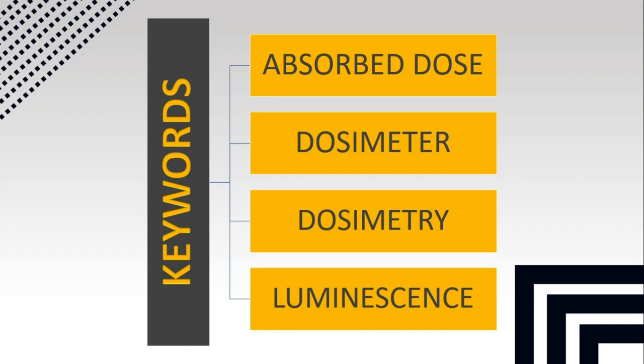A dosimeter is a detector that can detect and measure directly or indirectly exposure to radiation. Dosimetry is the science and practice of radiation safety by which absorbed dose is determined.